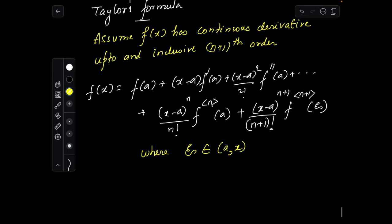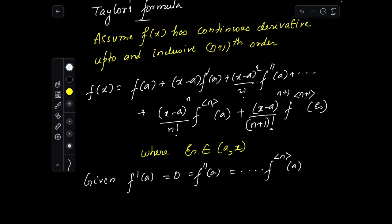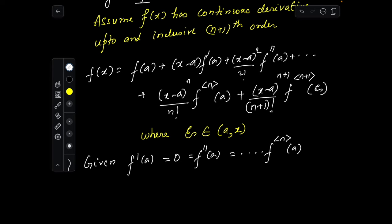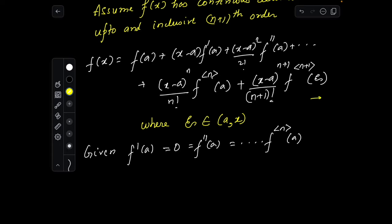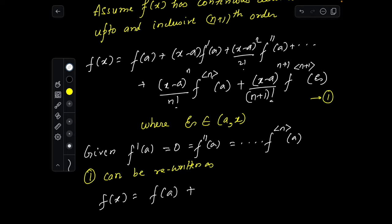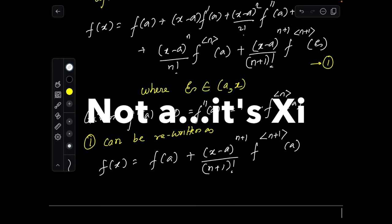Given that f'(a), f''(a), all the way up to the nth derivative of f at a are all zero, the Taylor formula reduces to: f(x) = f(a) + (x−a)^(n+1)/(n+1)! · f^(n+1)(ξ).